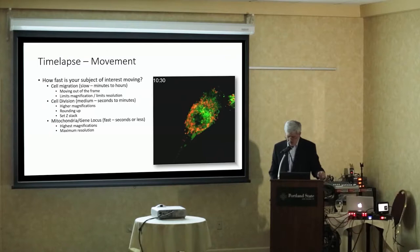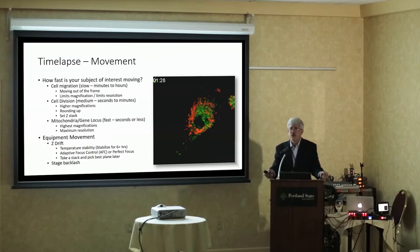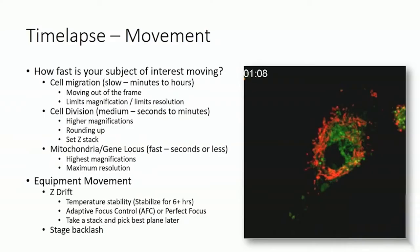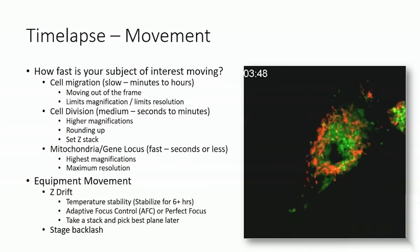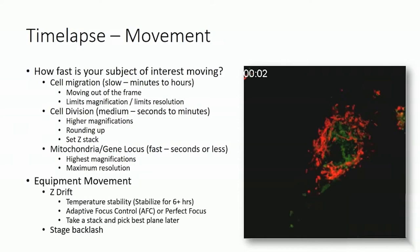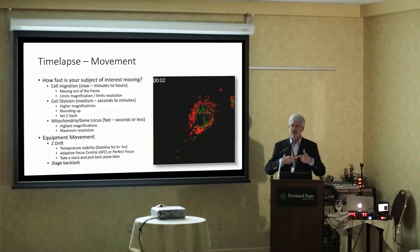Just as with cameras, the subject can be moving, but your equipment can be moving too and screwing things up. One major issue is Z-drift — the stage is actually settling down and your cells go out of focus while you're trying to image. It usually isn't a problem in 15 minutes, but it can be a problem over days. Stage backlash is another issue: as you're doing multipoint movement, going clockwise gives one effect and counterclockwise gives a different effect because of the screws in the stage, leading to jiggling in your final images.